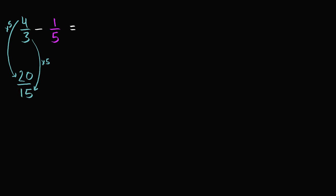Now how would we rewrite 1/5 as something over 15? To go from 5 to 15, we have to multiply by 3. So if we multiply the denominator by 3, we have to multiply the numerator by 3 as well. 1 times 3 is just 3. So 4/3 minus 1/5 can be rewritten as 20/15 minus 3/15.